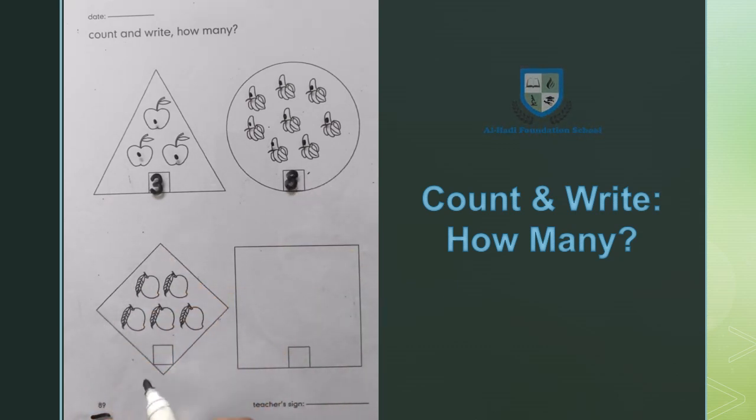Next shape has the mangoes. Now we will count these mangoes: 1, 2, 3, 4, 5. Five mangoes. We will write the block: 5.